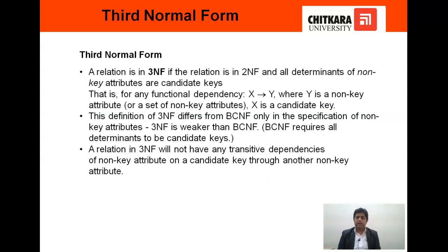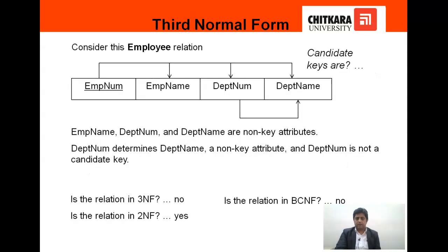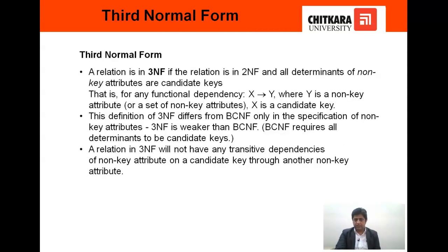Now we come to 3NF. To bring a relation into 3NF, we have to make it into 2NF first. After that, we will determine the functional dependencies in that table. The 3NF states that a table is in 3NF if it has a functional dependency where X determines Y, where Y is a non-key attribute and X is a candidate key. A relation in 3NF should not have any transitive dependencies of a non-key attribute on a candidate key through another non-key attribute.